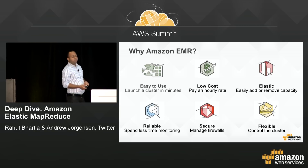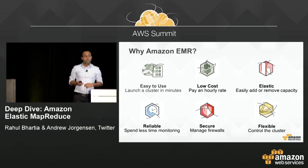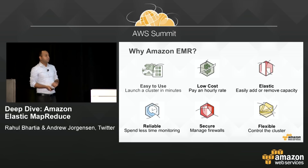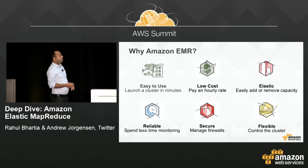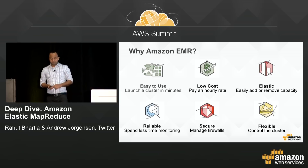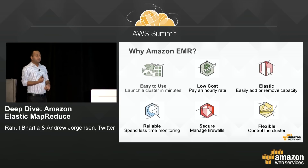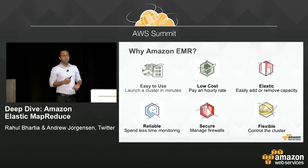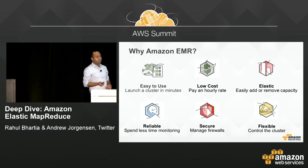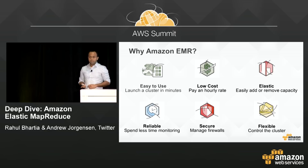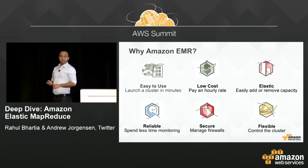First, with Amazon EMR you can launch a cluster by clicking a few buttons within a few minutes and get started with a fully managed Hadoop cluster on AWS. Second, you don't have to invest in figuring out how much infrastructure you need upfront. You can start a cluster, do your work, and only pay for the time you use. You can also add compute capacity to your EMR cluster using a single API operation, so if your job is taking longer you can add more nodes without hassle.